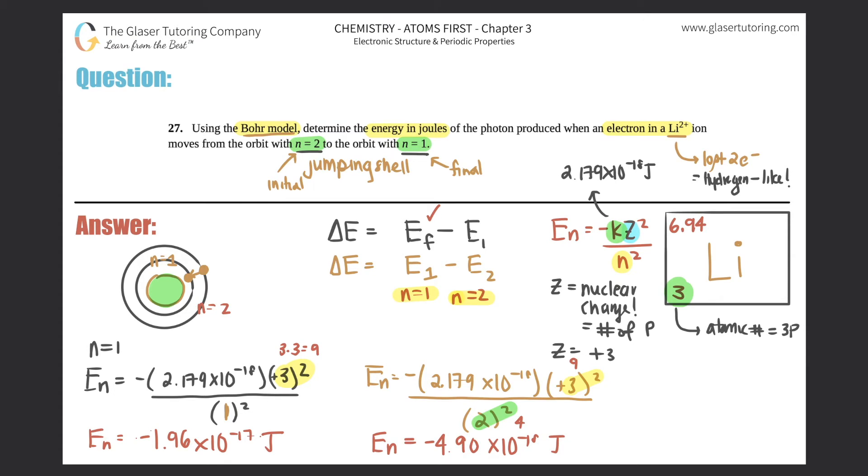So the energy of the second shell is negative 2.179 times 10 to the negative 18th times 9 divided by 4. And I get negative 4.90 times 10 to the negative 18 joules.